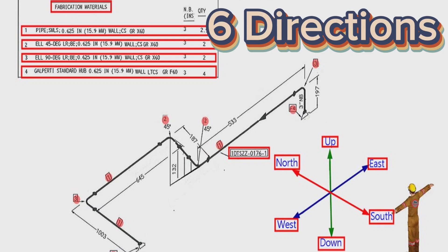The man who reads the isometric must think that he is in the middle of these directions. His face will be to the north, his back to the south, his right hand to the east and his left hand to the west. Let's try to read this pipe isometric using these directions.